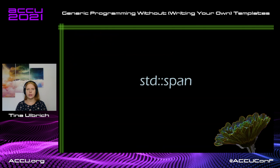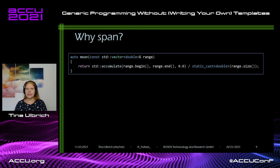Now we take a look at other ways of generic programming, and I will start with span. A span is a non-owning view over a contiguous sequence of objects. Let's look at this example: we calculate the mean of elements of a vector of doubles.